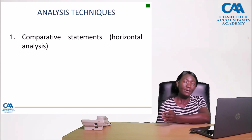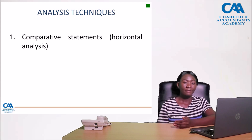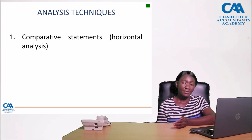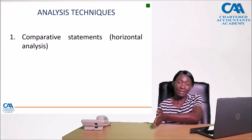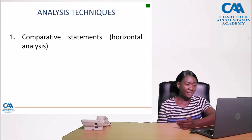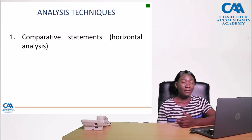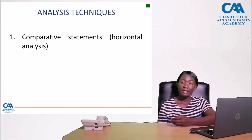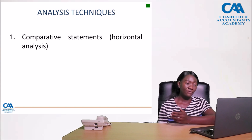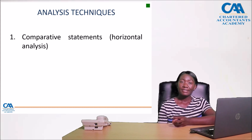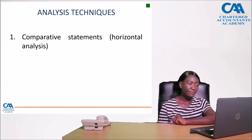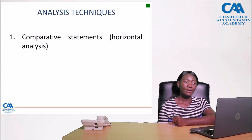I can establish changes in growth patterns, such as changes in seasons, if my product is affected by a change in season. By looking at the income statement, the statement of financial position, and the cash flow statement, one can create a complete picture of operational results and see what has been driving the company's performance over the years.